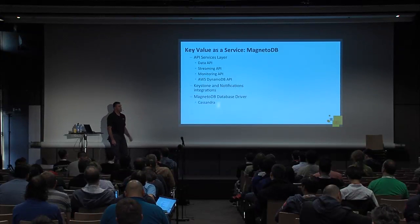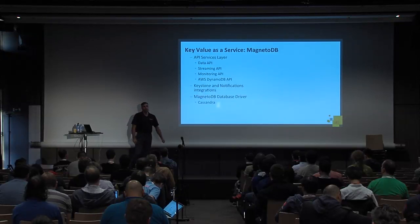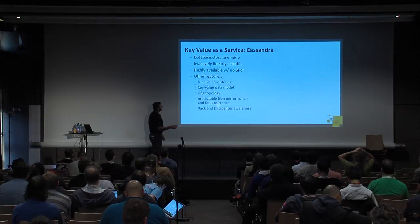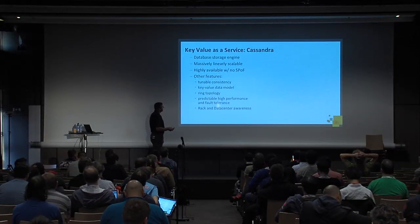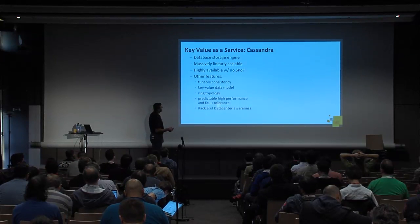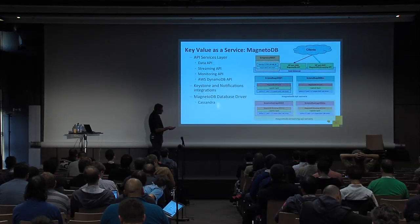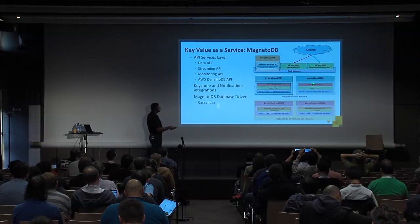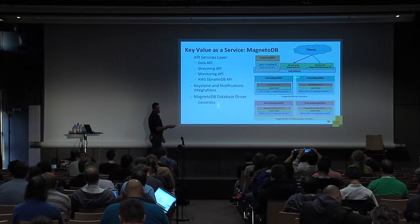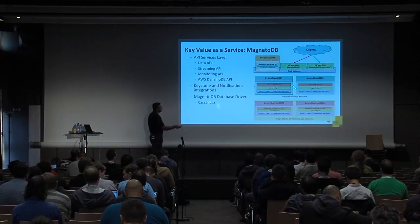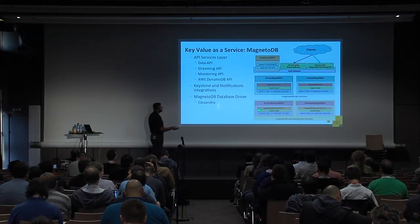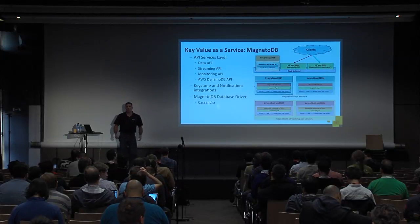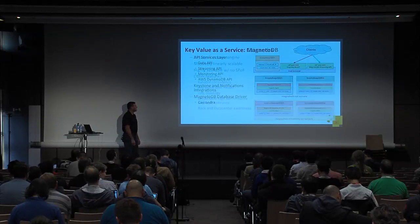The MagnetoDB database driver — and like I mentioned, Cassandra is the solution we're using. When you pull that together, you get something like VIP ports, the proxy service, which load balances to your MagnetoDB API services — whether you have your straight API for your data or your streaming API service. So you have a very traditional REST API solution architecture.